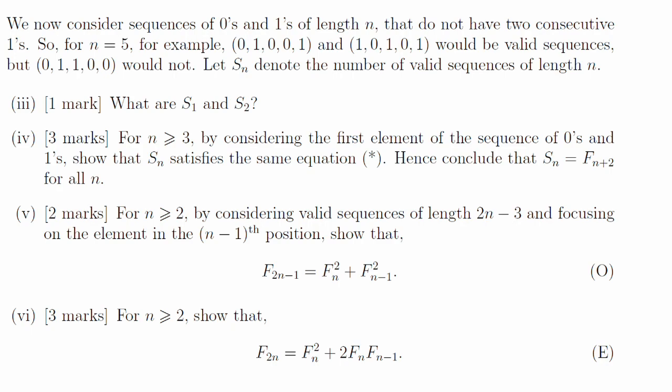Part 5. We're asked to consider the middle value of the sequence, which might be a 0 or it might be a 1. If it's a 0, then on the left and on the right, we've got independent choices of valid sequences. Whereas if it's a 1, then we need 0s on either side, and then valid sequences that are just a little bit shorter. That corresponds to the terms in the expression O.